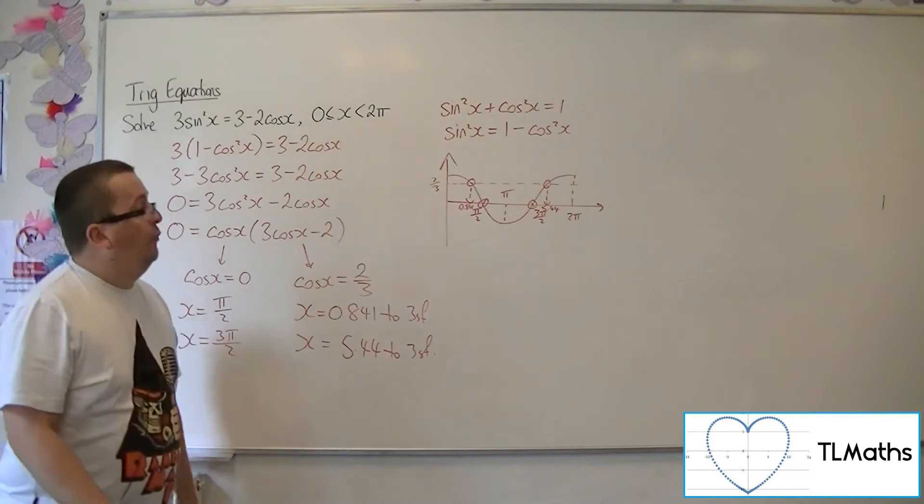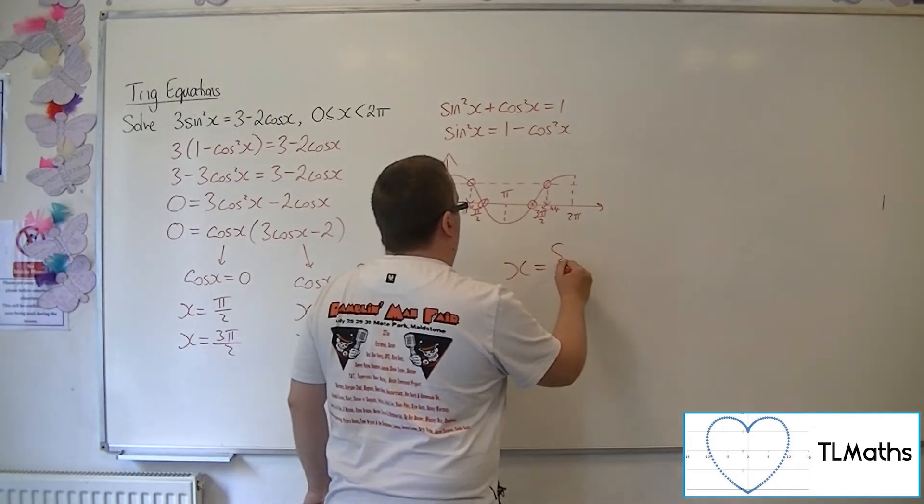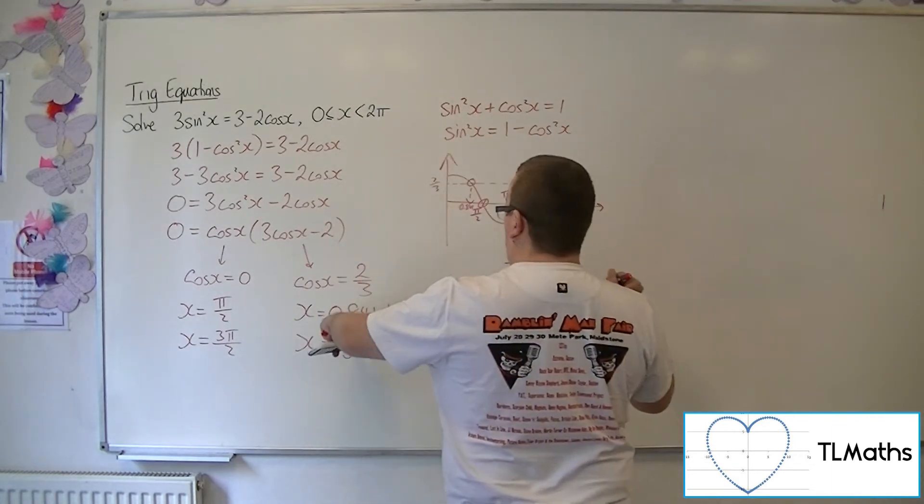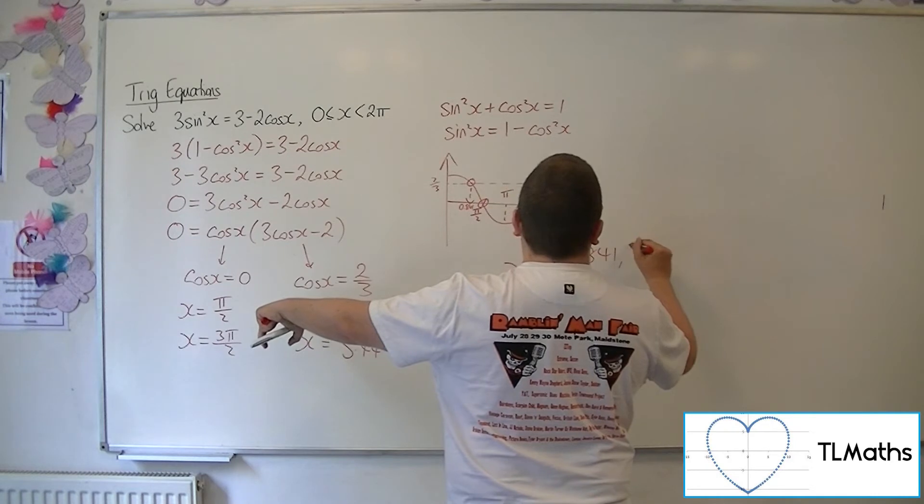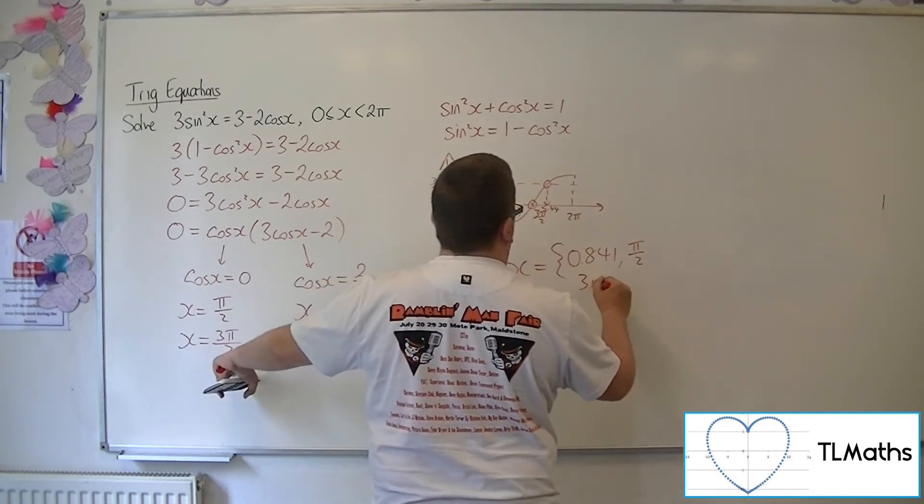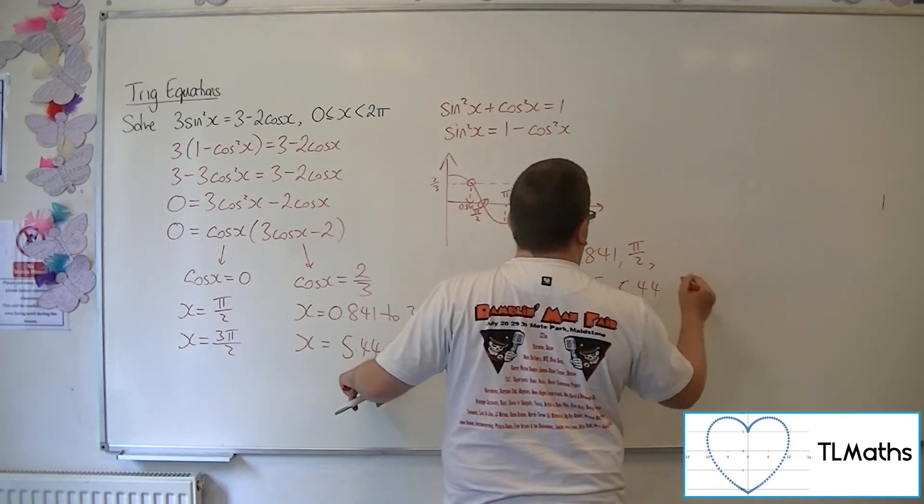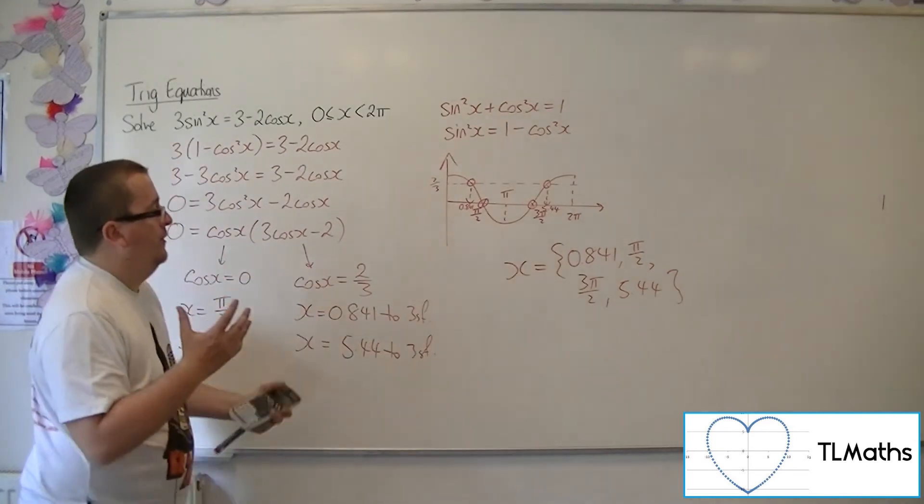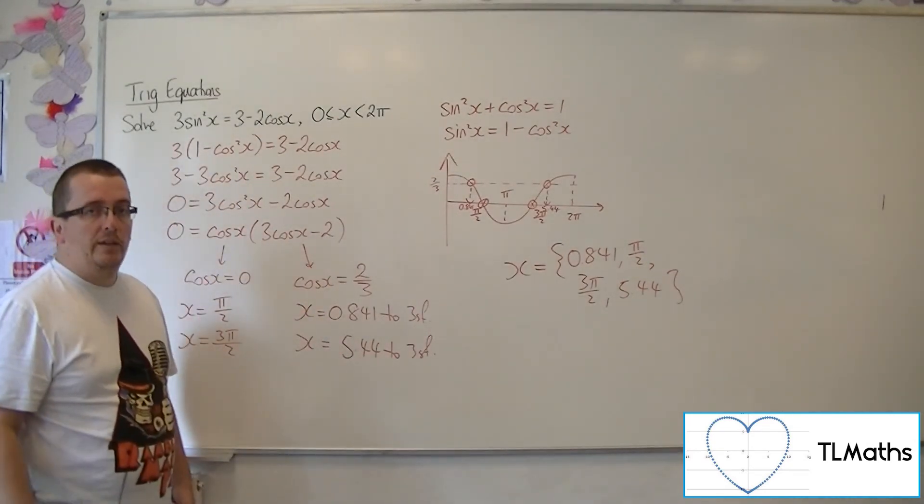And so we have the four solutions that we need. So in order of size, I've got the 0.841, then we've got the pi over 2, then we've got the 3 pi over 2, and then we've got the 5.44. And they are the four solutions that solved the original problem between 0 and 2 pi radians.